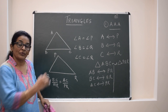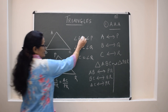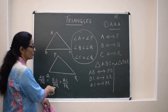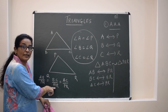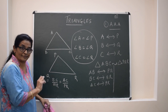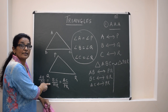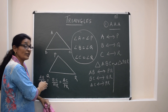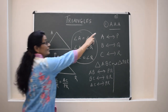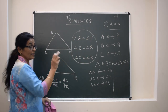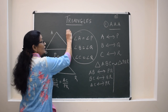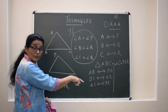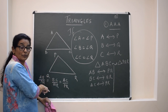So if we are writing the sides in the same proportion, we write: AB upon PQ equals BC upon QR equals AC upon PR. So these two factors — corresponding angles are equal, so corresponding sides will be in the same proportion; or if the corresponding sides are in the same proportion, the triangles will be similar.